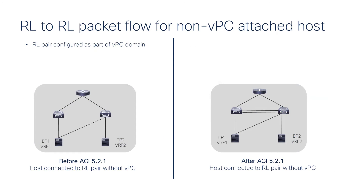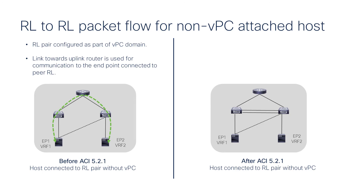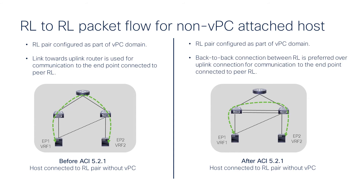Just to look at it in contrast — before 5.2.1 and after 5.2.1. Before 5.2.1, with back-to-back connected links, whether those endpoints are in the same EPG, a different EPG, or a different bridge domain, traffic will go to the upstream router if it is a non-VPC host. But after 5.2.1, with these back-to-back connected links, all that traffic is going to go over these back-to-back links.